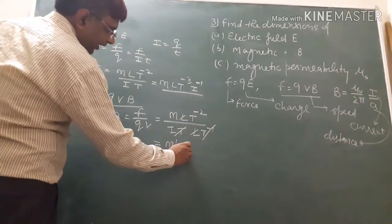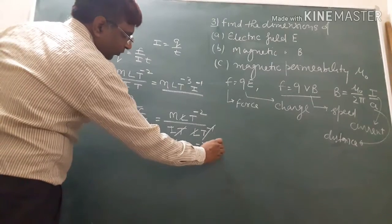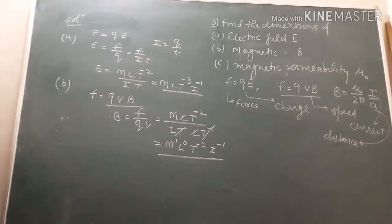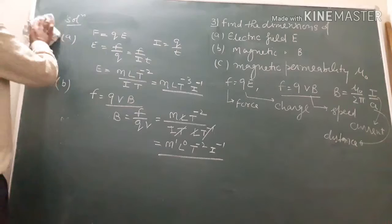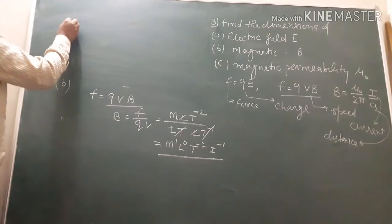If we do all of this, M L T minus 2 upon I T, this T will cancel. So we get the dimensions for B, the magnetic field.